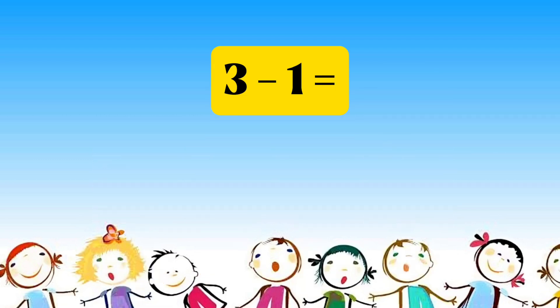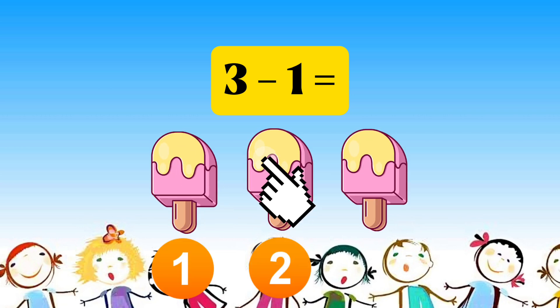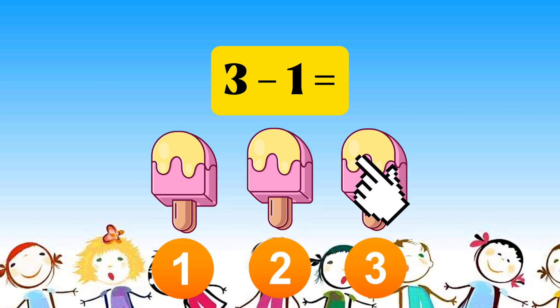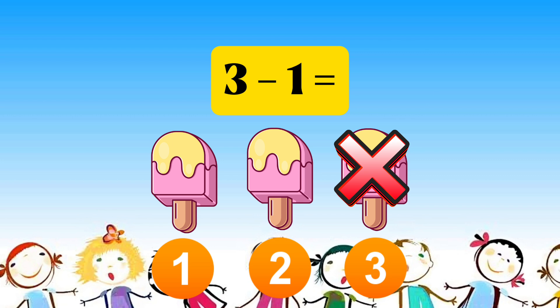Three minus one equals one, two, three. Less one equals two.